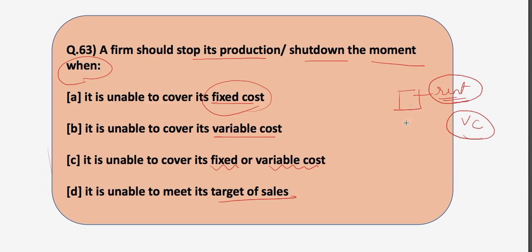If you are running a factory which is on rent and if you are unable to cover your variable cost, that is the moment when you should stop your production or shut down the factory. Because if you shut down your factory when you are unable to cover your fixed cost, till the time you are able to cover your variable cost, it acts as a compensator for your fixed cost and your total loss will therefore be less.